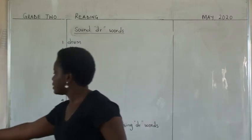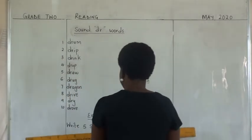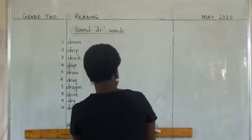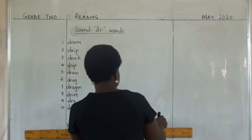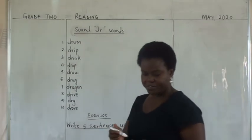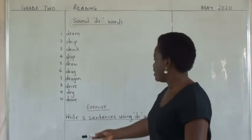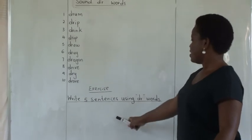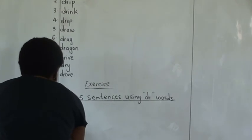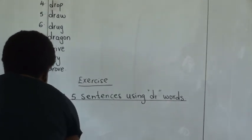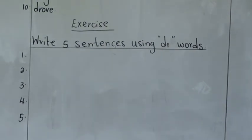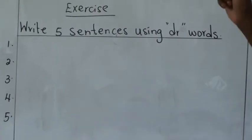Write five sentences using 'dr' words. Pick five words from the ten and use them to make sentences — five sentences. When you have one, two, three, four, five — no using two words to make two different sentences. Use one word for each sentence.